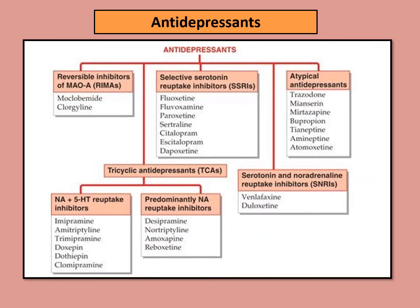This is a classification of the antidepressant drugs, starting with the MAO inhibitors, then SSRIs — the most popular group — which only block serotonin receptors. Then you have atypical antidepressants like bupropion. Tricyclic antidepressants are divided into those which inhibit both norepinephrine and serotonin reuptake, like amitriptyline and doxepin, and those which predominantly inhibit norepinephrine reuptake.